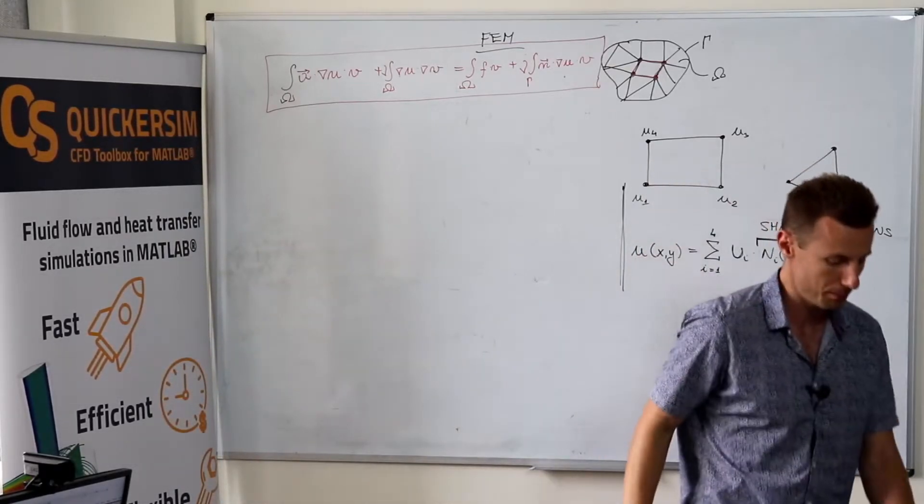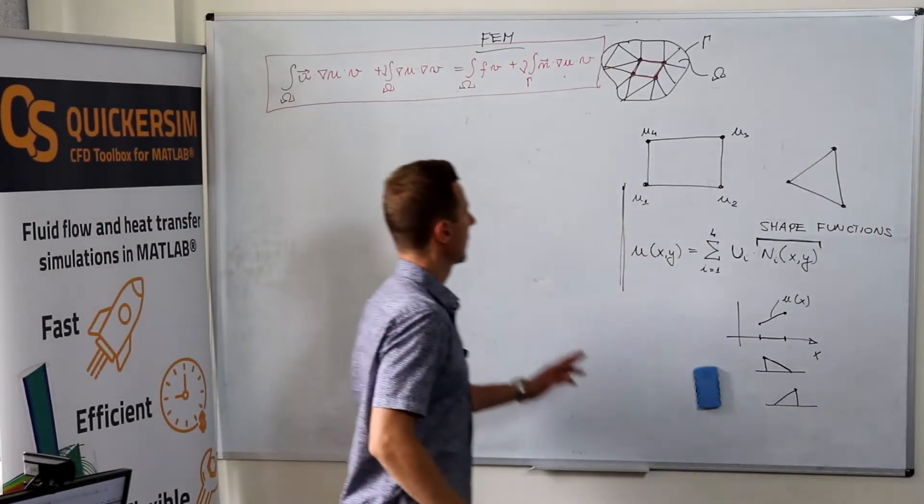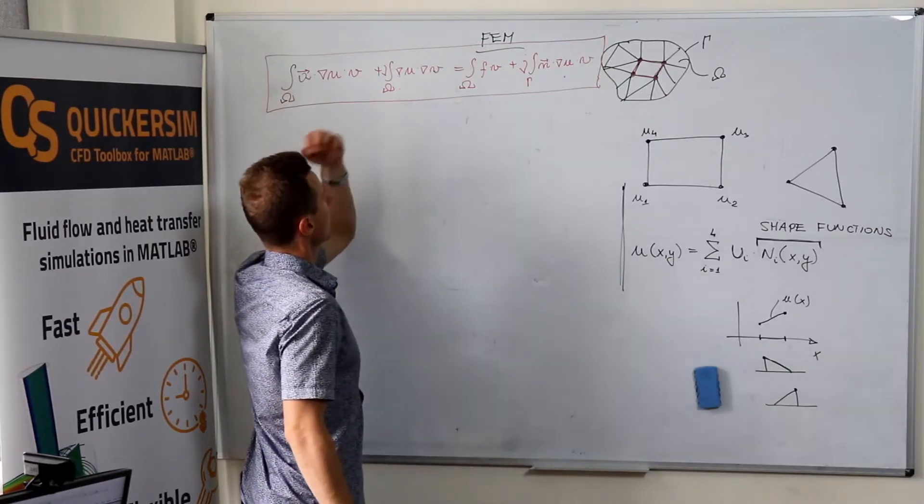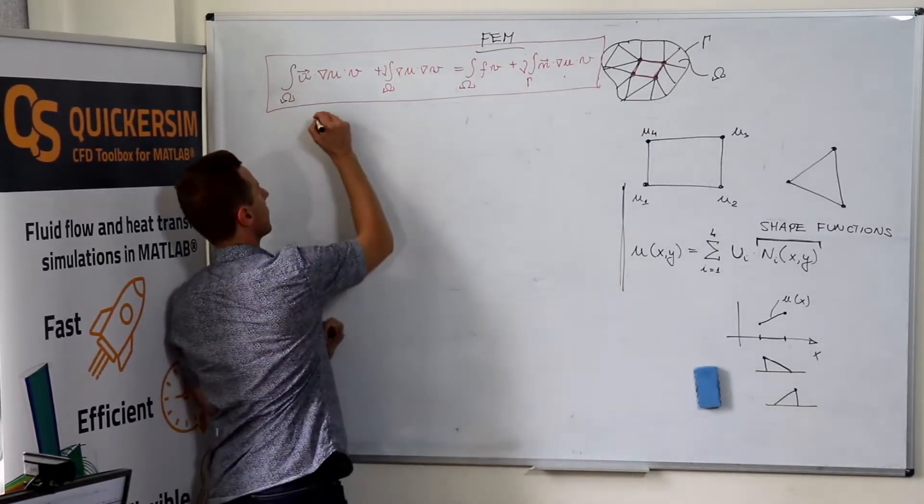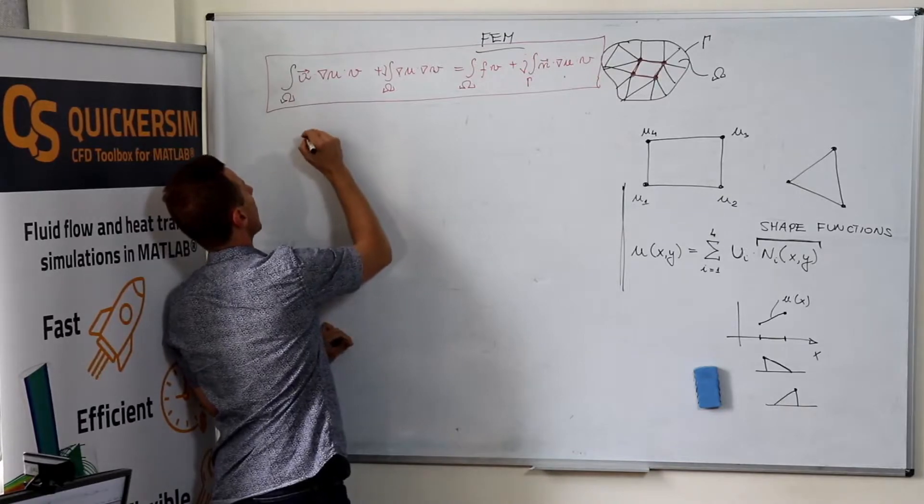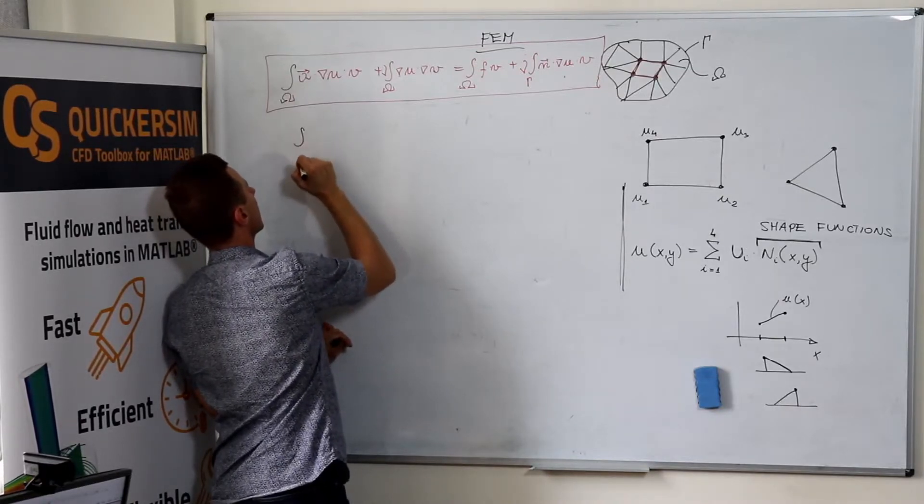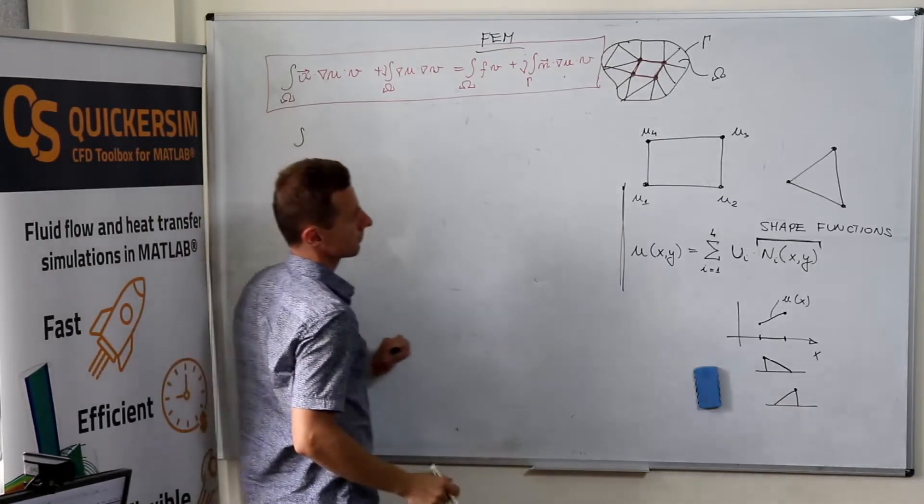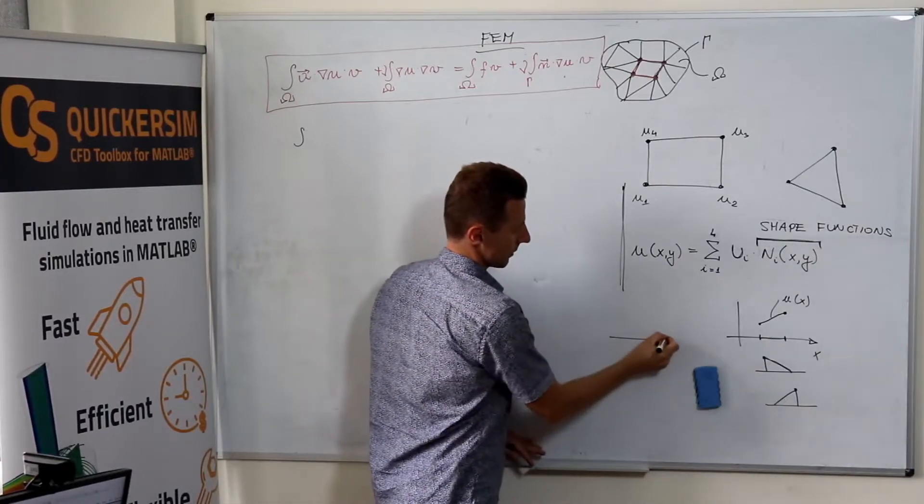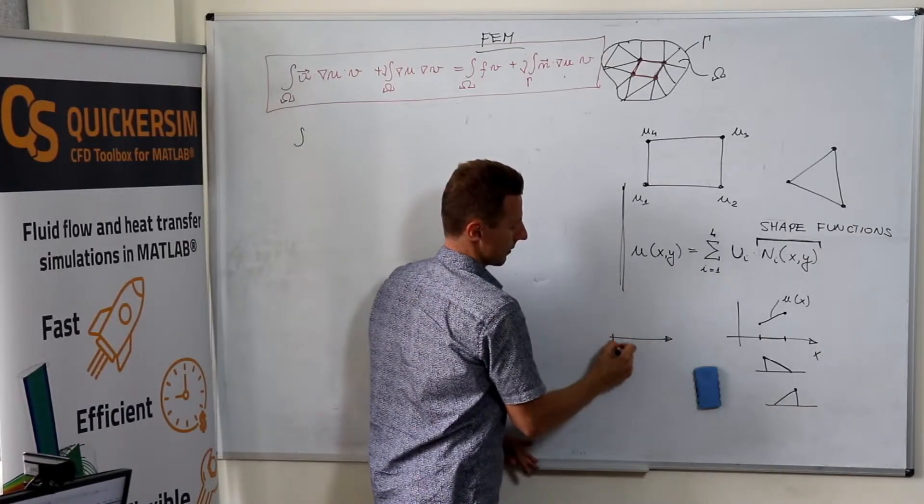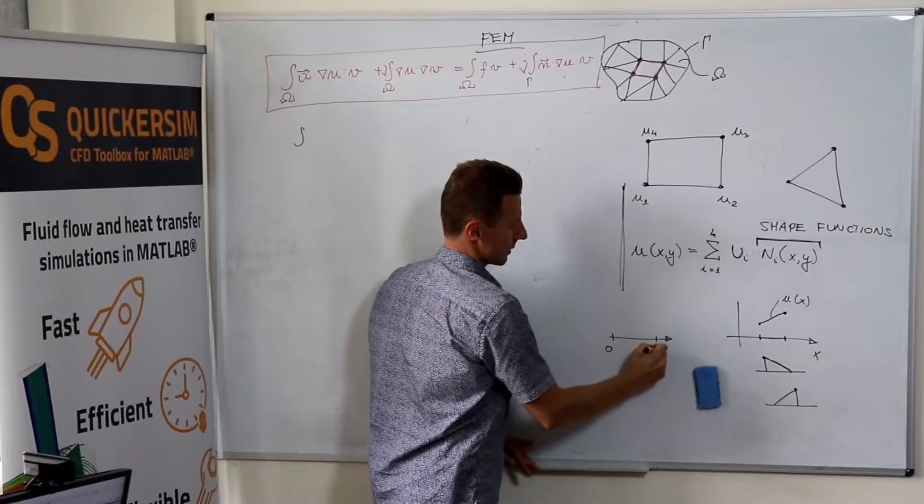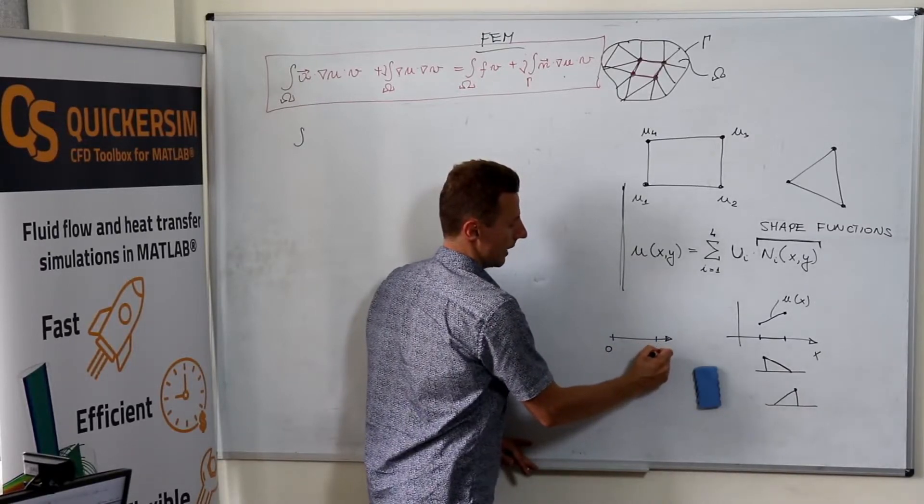For a moment, for the sake of simplicity of the explanation, let me also write the one-dimensional form of that. How would it look like? Let's assume that we've got some domain that spans from zero to l.